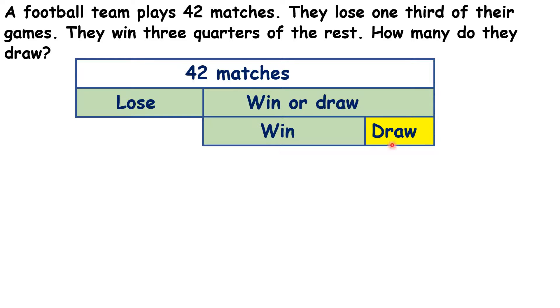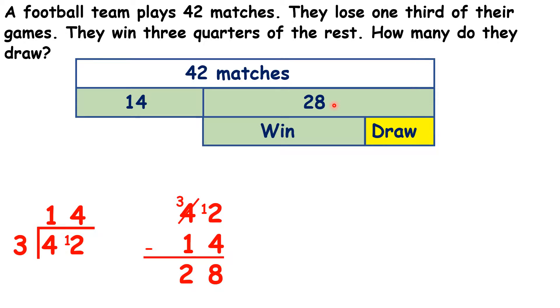If one third of the 42 matches are lost, we can divide 42 by 3 to get 14, so 14 matches are lost. The rest are either won or drawn, so if we subtract the number lost from the total, we know that 28 matches are either won or drawn.